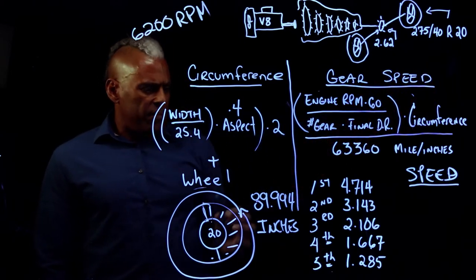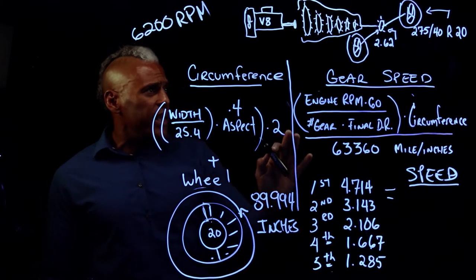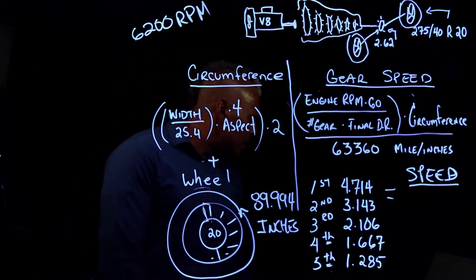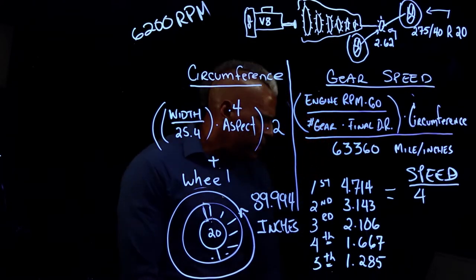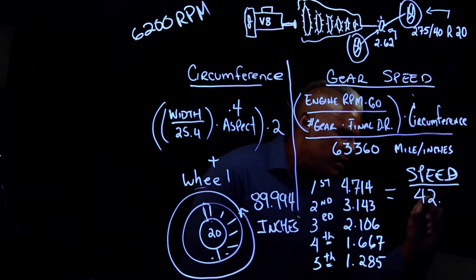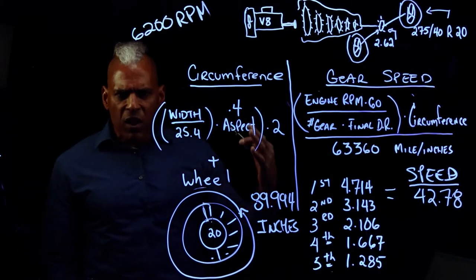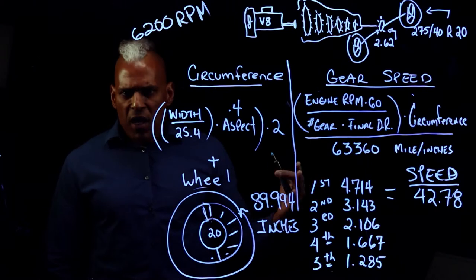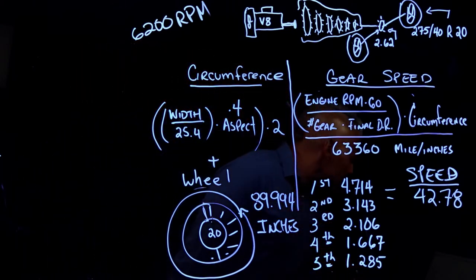So if you're in first gear with your final drive ratio, with a circumference of 89.9 inches, your first gear, your maximum speed that you'll be able to get out of this car will be 42.78 miles per hour. In first gear, that is your red line point. That's the fastest this car can go in first gear. Once you hit that point, you should be at 42 miles per hour. Next, once you shift to second gear, second gear will allow you to hit 64.16 miles per hour.